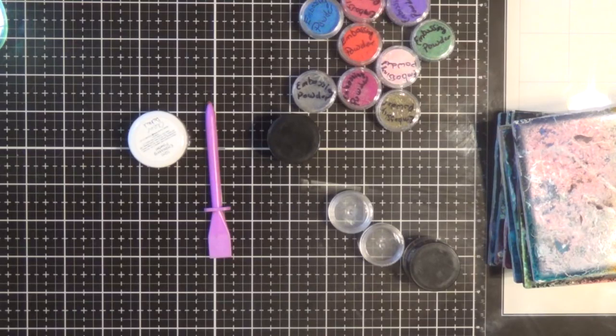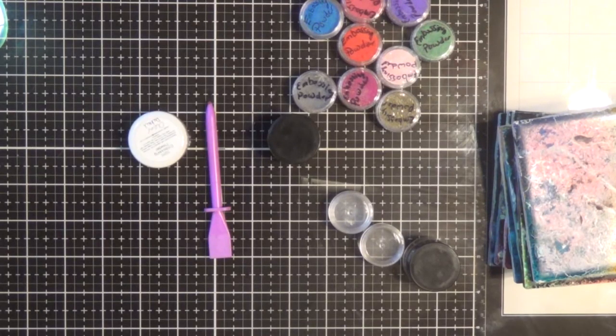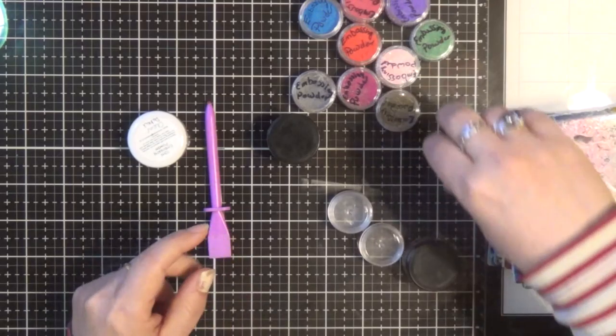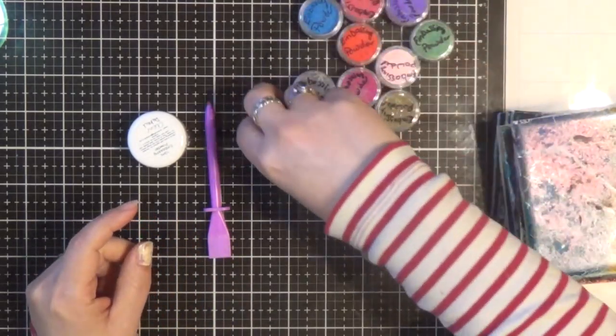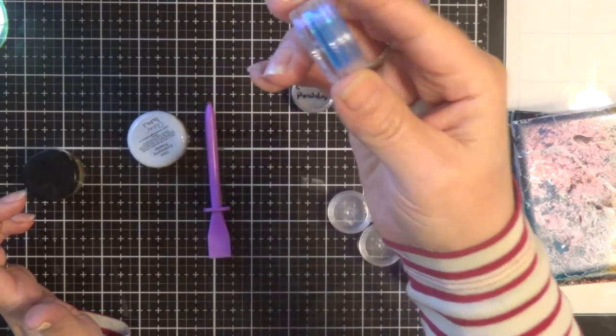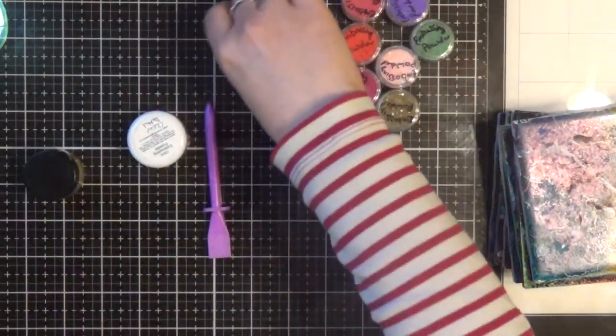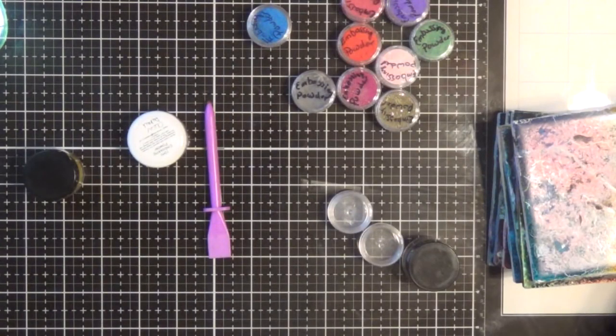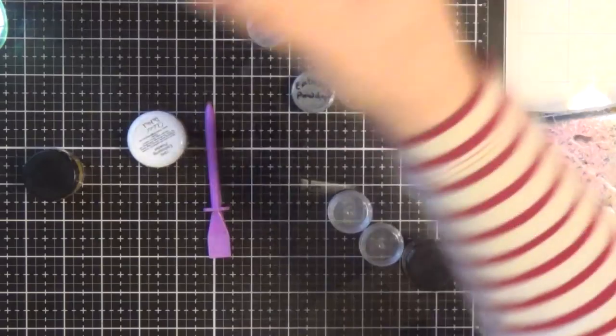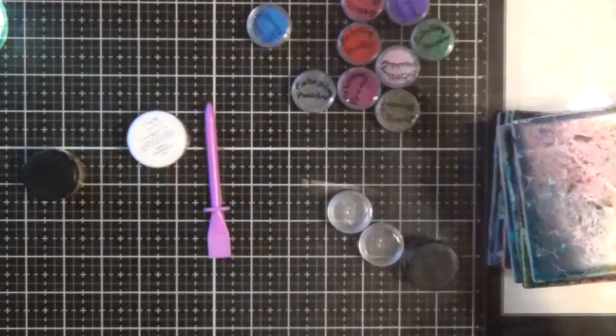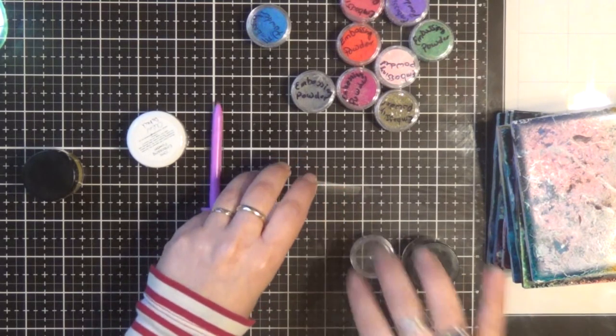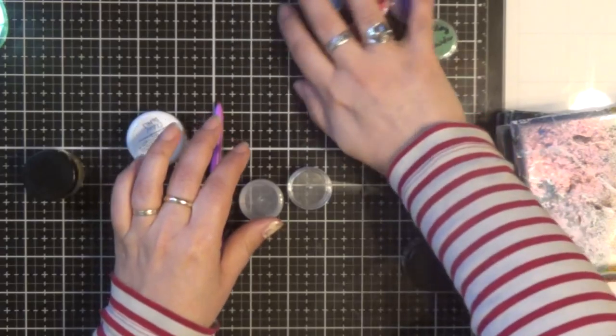So what you're gonna need is embossing powder. You can use white I'm assuming, but I'm gonna use clear. And the thing that I like also is that it actually doubles the amount that you have. I made this color here. Okay, so I have these little containers, empty little containers that I've upcycled. I'm gonna move these to the side.